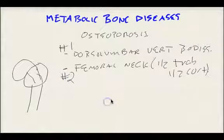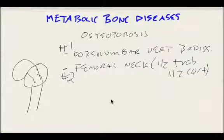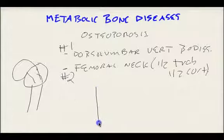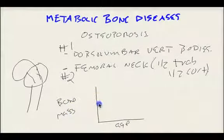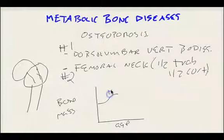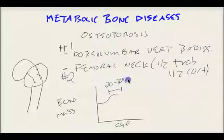The major determining risk factor for osteoporotic fractures is going to be bone mass. During childhood and adolescence, bone mass is constantly increasing. If we were to draw a graph of age versus bone mass, as someone is aging, their bone mass is going to increase, and it peaks anywhere between 20 and 30 years of age.